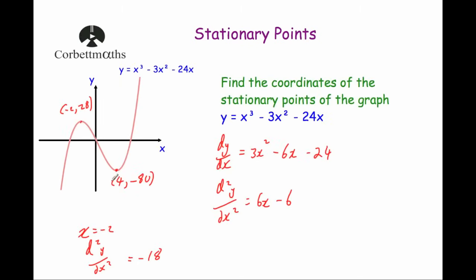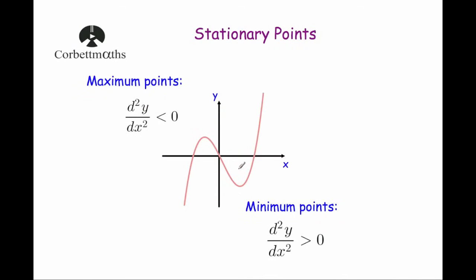For our minimum turning point x equals 4: substituting into d²y/dx² gives 6 times 4 is 24, take away 6 is 18. That's positive, confirming it's a minimum — for minimum turning points the second derivative should be positive, and that's correct.